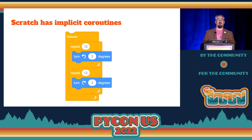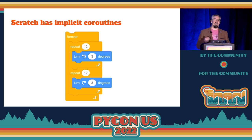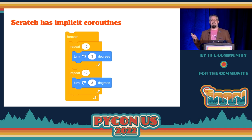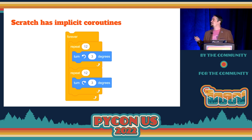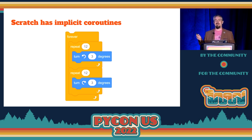Another example: this is code from Scratch, a graphical programming language. It has forever loops and it doesn't have a break, so naively this would just hang — but this is the way you do animation in Scratch. You do a forever loop, so there is an implicit yield somewhere in there, in fact in a few places.